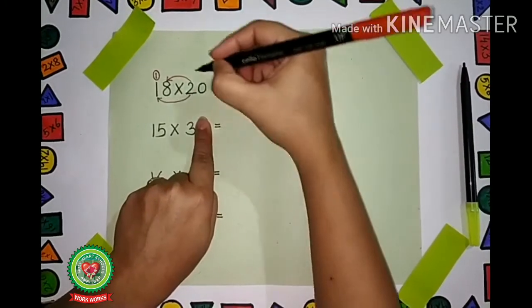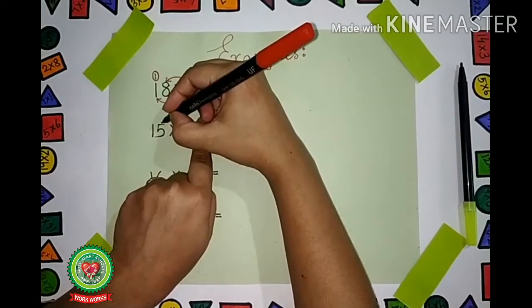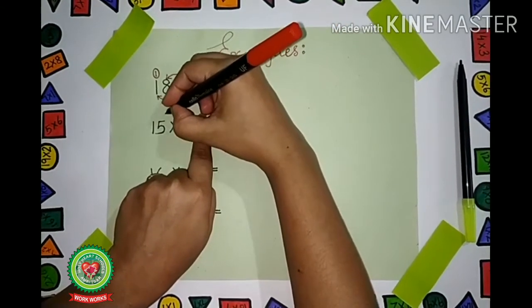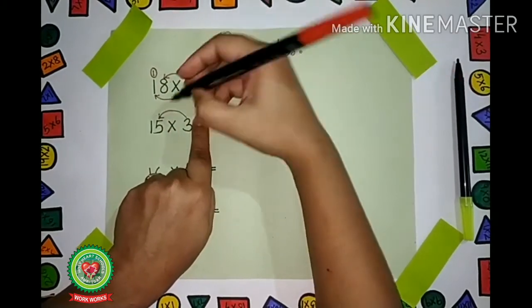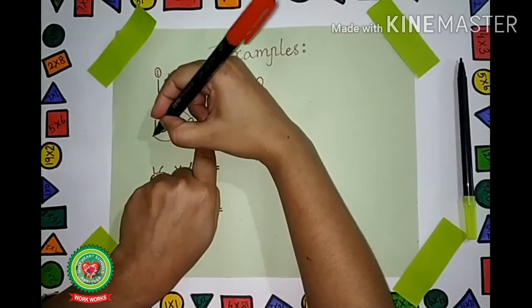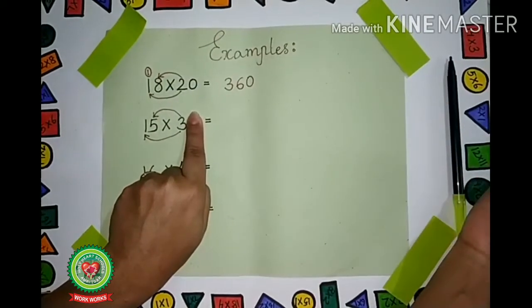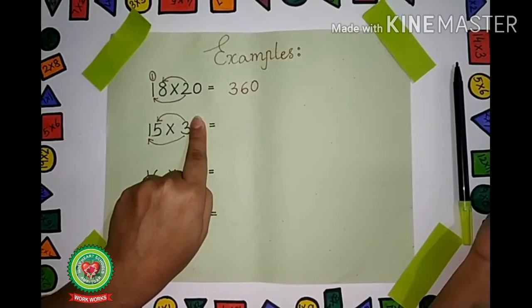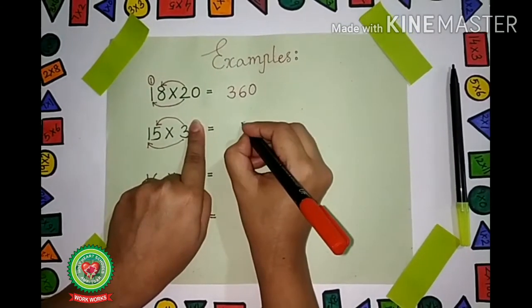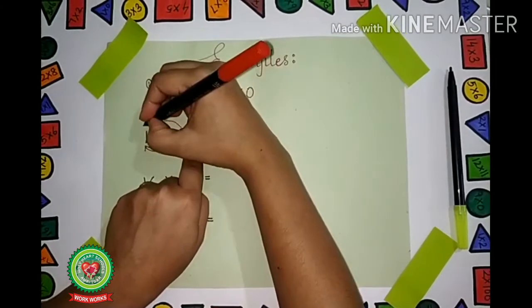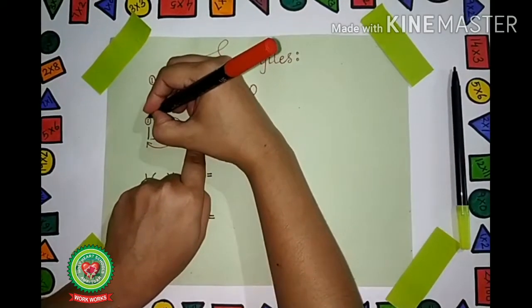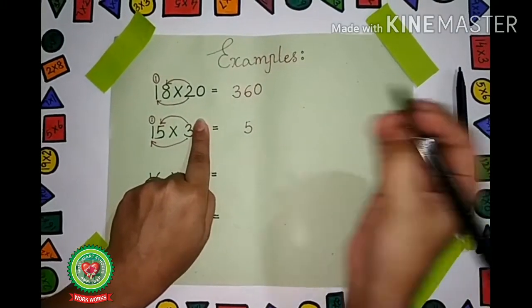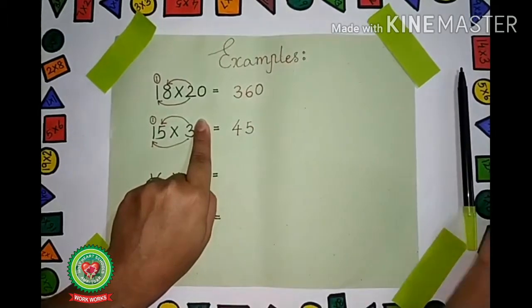Remember, we have to multiply 3 with the first digit from the right hand side, then 3 with the next digit. 3 with 5 first, then 3 with 1. What is 3 × 5? Read the table of 3 till 5. Three 5's are 15. Write 5 over here and 1 carry. Now 3 × 1 are 3, plus 1 carry is 4. The number is 45.